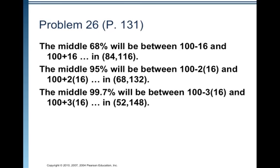The middle 99.7 percent will be between 100 minus 3 times 16, that's 48, and 100 plus 3 times 16. So in the interval 52 to 148.